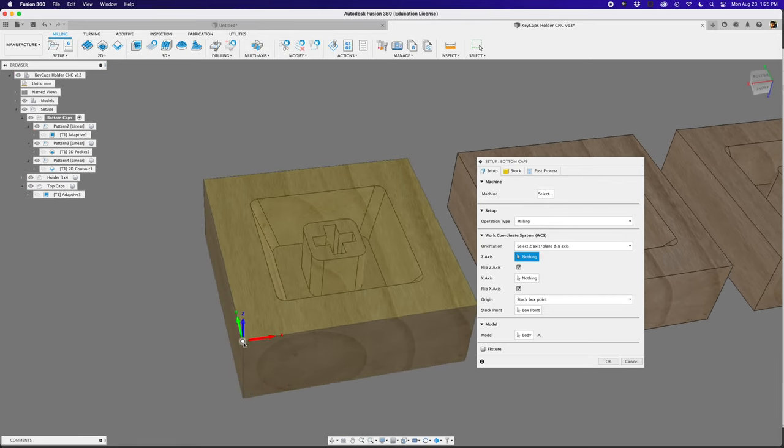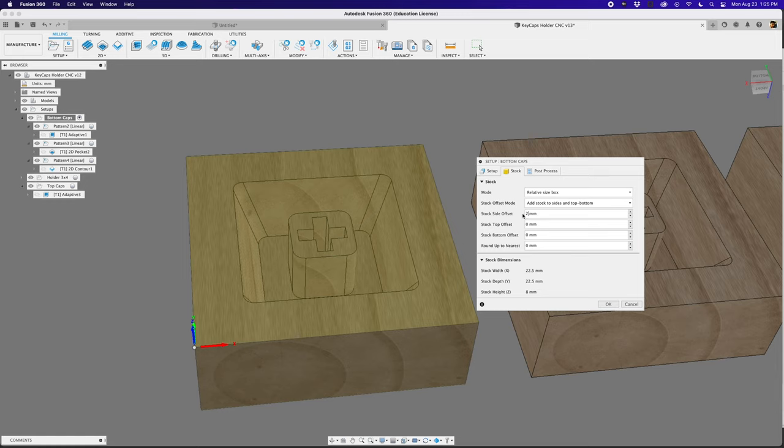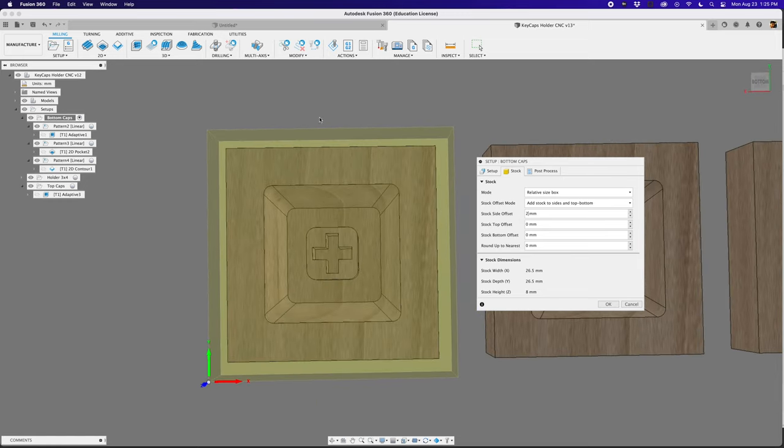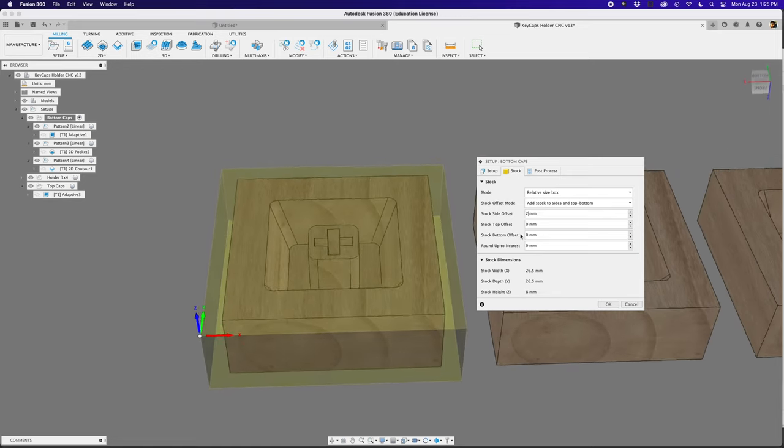To set up my stock, I started by selecting the top of the model at the lower left corner. This way my work coordinates are the same as the spoil board on my desktop CNC. I then added a 2 millimeter offset to the side of the stock so that I'd have some extra material to work with. I left the top and bottoms with zero offset so that I wouldn't need to worry about facing the material in this operation.